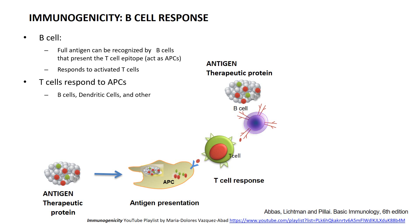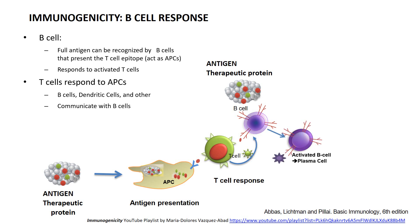So when the T cells are presented — either from the B cell or from a dendritic cell — a particular epitope that comes from a drug, they can then produce cytokines that stimulate the B cells. These B cells will become activated and they secrete cytokines themselves, like interleukin-6 or TNF, and they can also differentiate into plasma cells that eventually will produce the antibody.